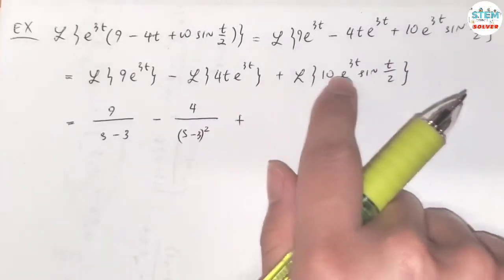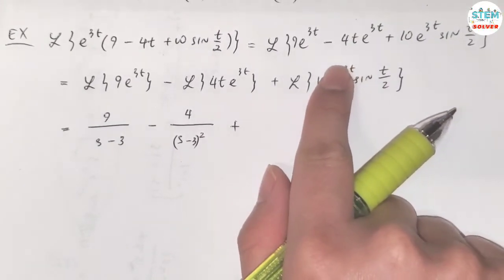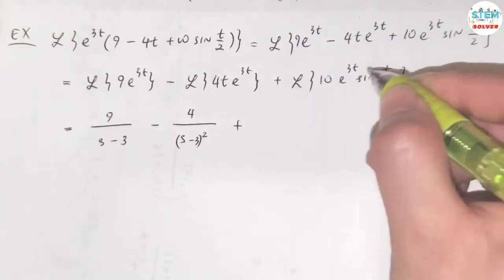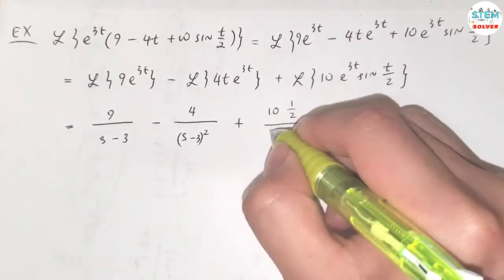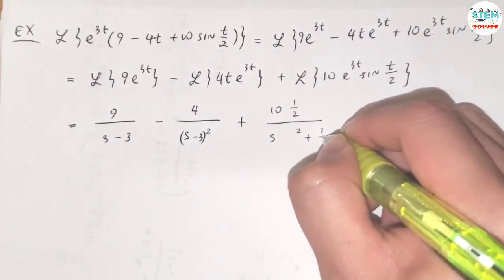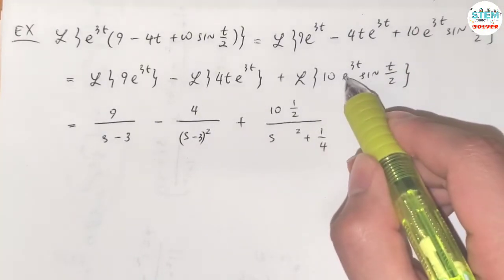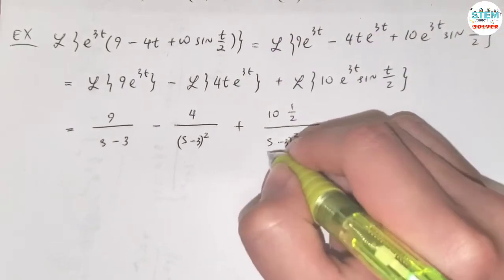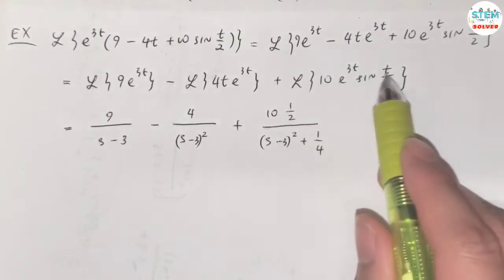Now for this one, the same thing uses the translation theorem on the s-axis. So I can ignore this first. So you have 10 sine t over 2, right? And the Laplace transform of this is 10 times 1 half over s squared plus 1 fourth. Now you have a shift here. So you have the translation here as a equals 3. So you have s minus a which is s minus 3. So this is the answer of this one.